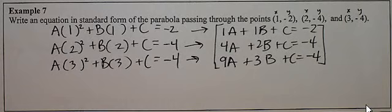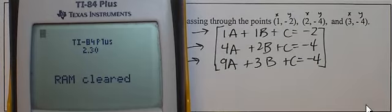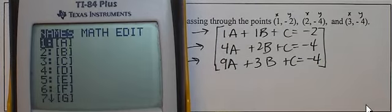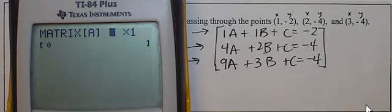Grab your calculator and do 2nd plus 712. And we're going to go 2nd matrix, and we're going to edit matrix A. It's going to be a 3 by 4 because there's three equations and four columns.